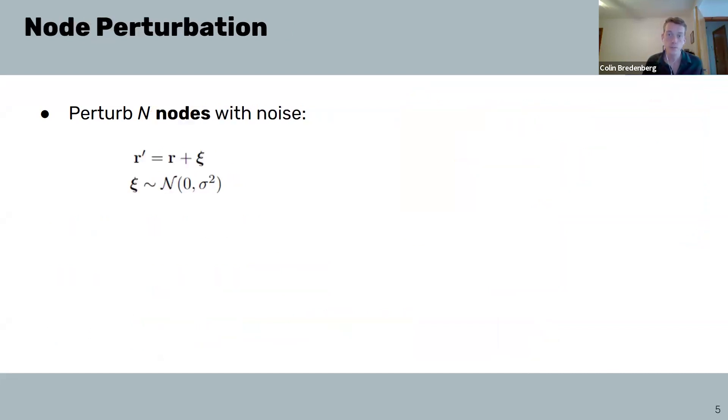Now, as we'll explain in more detail in a subsequent video, weight perturbation is extremely inefficient because it requires averaging over perturbations to n-squared synapses. One way to fix this problem is to perturb neurons instead of synapses. This method is called node perturbation, and the principles are very similar. So now we're adding Gaussian noise to our firing rates R and taking the following update, which we can again approximate as a sum over k-independent noise samples psi.